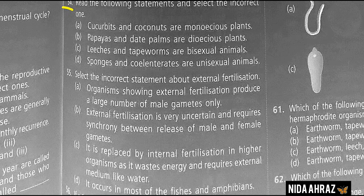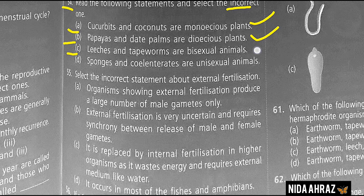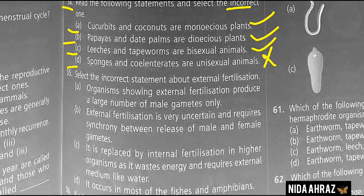Reading the following statements: cucurbits and coconuts are monoecious plants — correct; papayas and date palms are dioecious plants — correct; leeches and tapeworms are bisexual animals — correct; sponges and Salient roots are unisexual animals — incorrect. Option D is the correct choice.